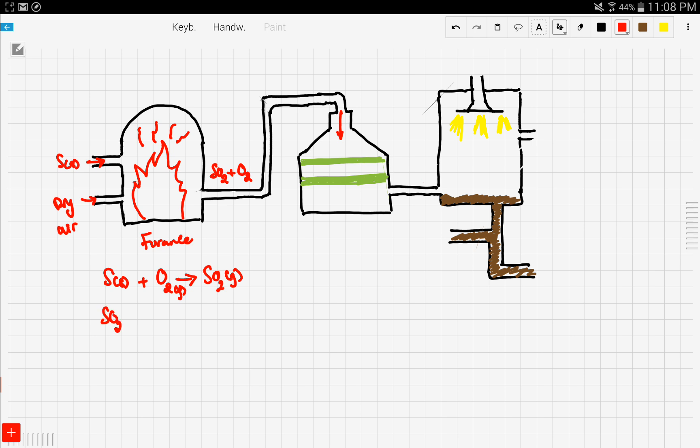Sulfur dioxide is passed through with oxygen onto a vessel that has a catalyst, vanadium oxide. Here there is vanadium oxide, and we know that the catalyst is a substance that speeds up the reaction but does not get involved.